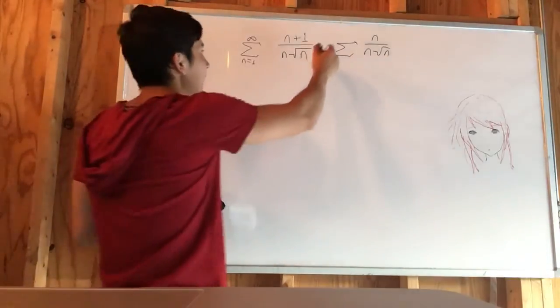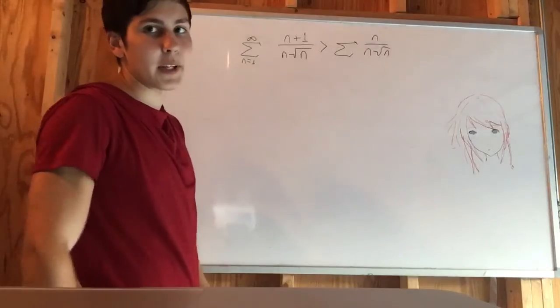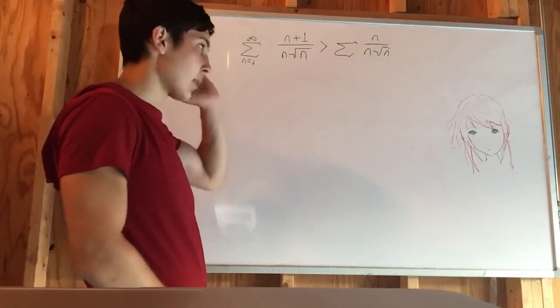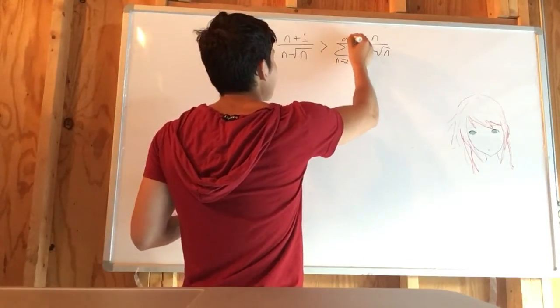But we can also intuit that this one's going to be greater because we're adding 1 in the numerator. So that sum is definitely going to be greater by the n if we have the same bounds there.